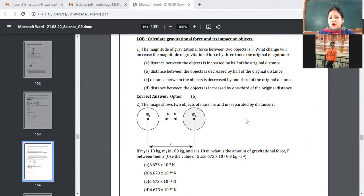The image shows two objects of mass M1 and M2 separated by distance R. If M1 is 10 kg, M2 is 100 kg and R is 10 meters, what is the amount of gravitational force F between them? Value of capital G is this. Gravitational constant value has been given here. All right, so hurry up, do it in your copy and let's find out the answer.